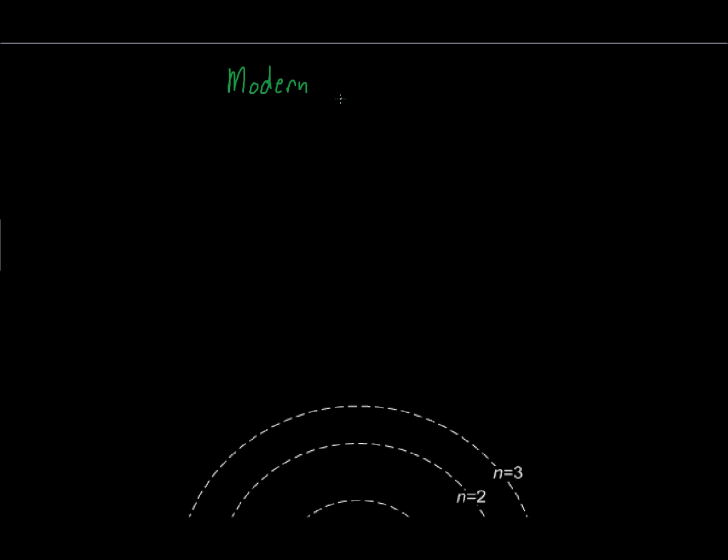Modern atomic model. The individual who played a major role in the modern atomic model of the atom is Niels Bohr, a very famous quantum physicist.